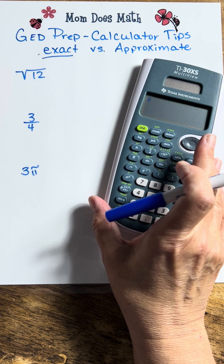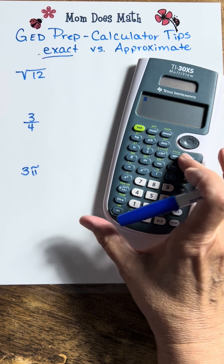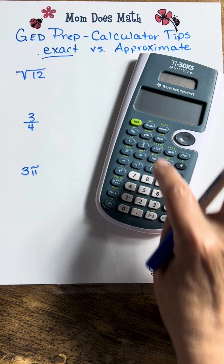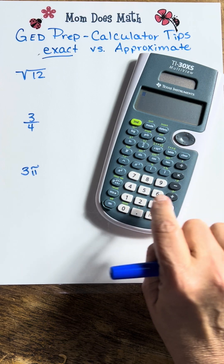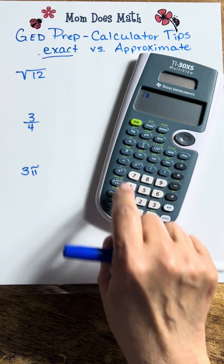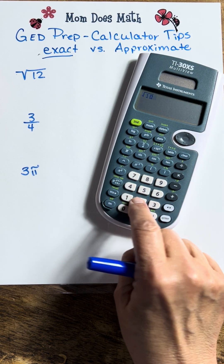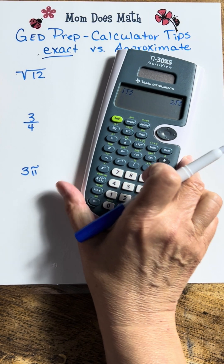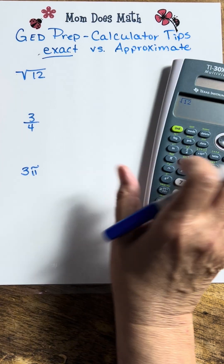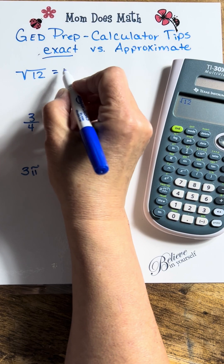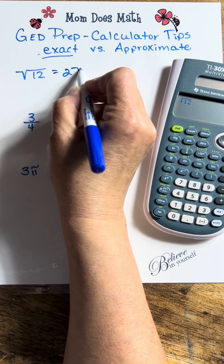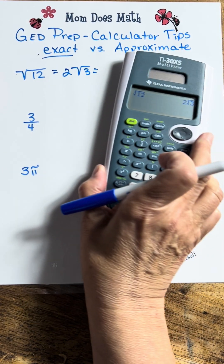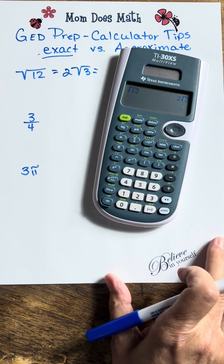What does that mean? Let's look at the square root of 12. If I enter — to do that, I'm going to hit second, 12, enter. Now you see for an answer it gave me 2 square root of 3. That is the exact answer.